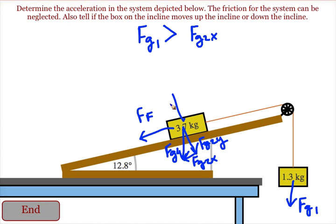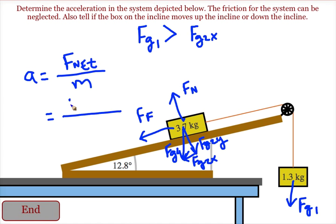Once we decide which way it's going, we can figure out the acceleration of the system. The acceleration of the system, as with all systems, is the net force on the system divided by the mass of the system.